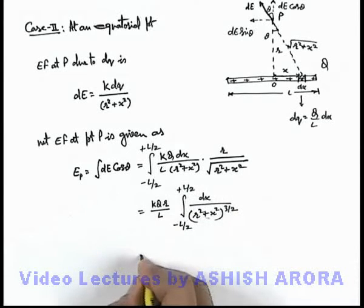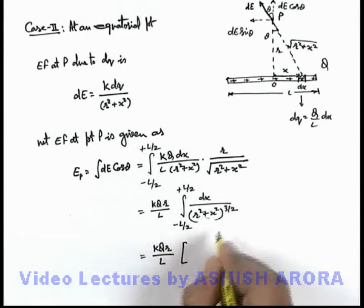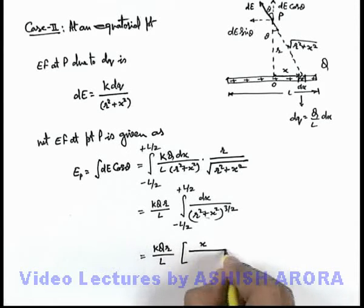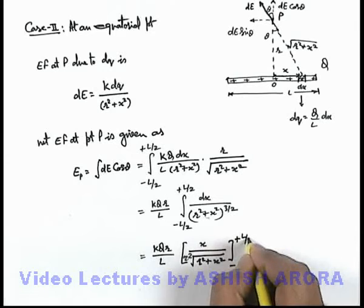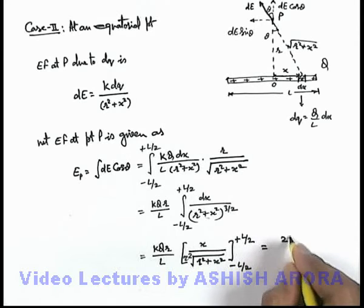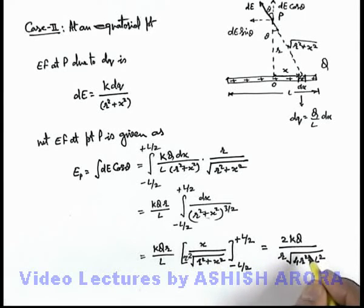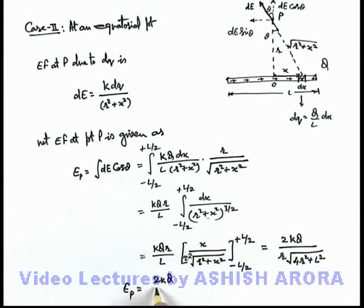This is a standard integration. Substituting the value, this will be k·q·r/l, and the integration gives x/(r²·√(r²+x²)), with limits from −l/2 to +l/2. When we substitute the limits and simplify, the final result for the electric field at an equatorial point is: E = 2kq / (r·√(l² + 4r²)). That is the result for the electric field strength at an equatorial point of a uniformly charged rod.